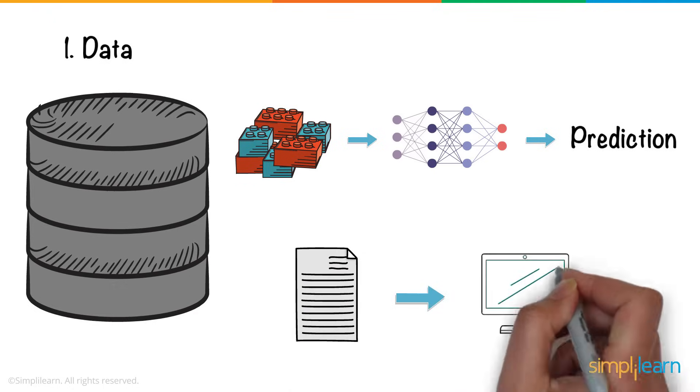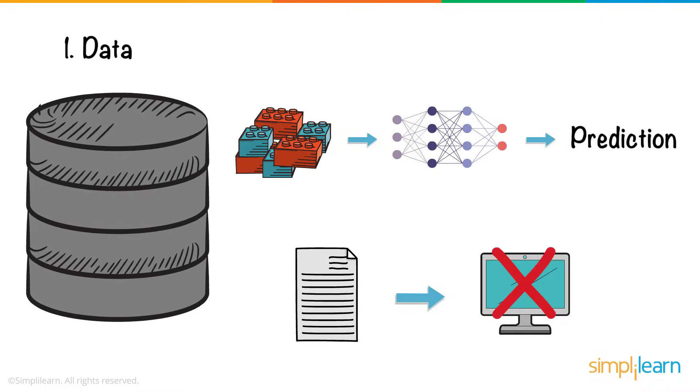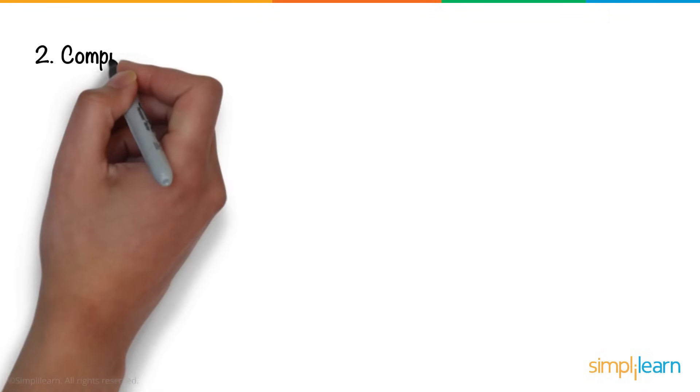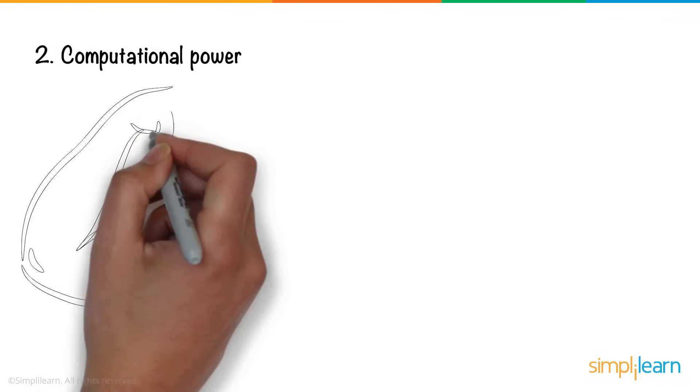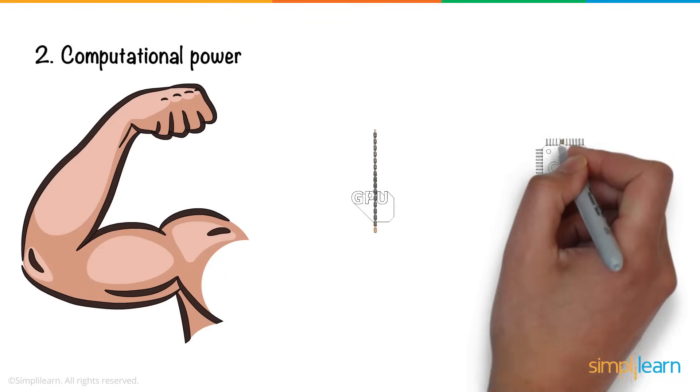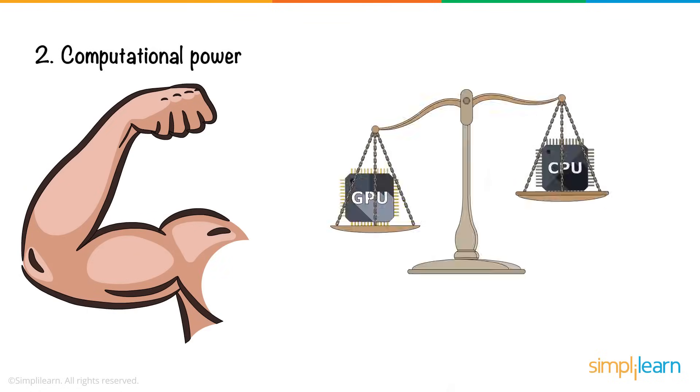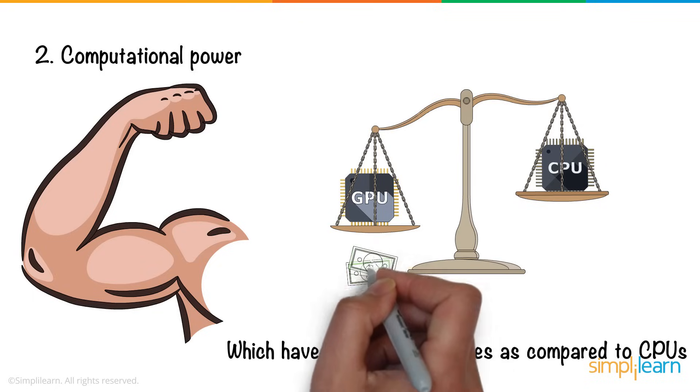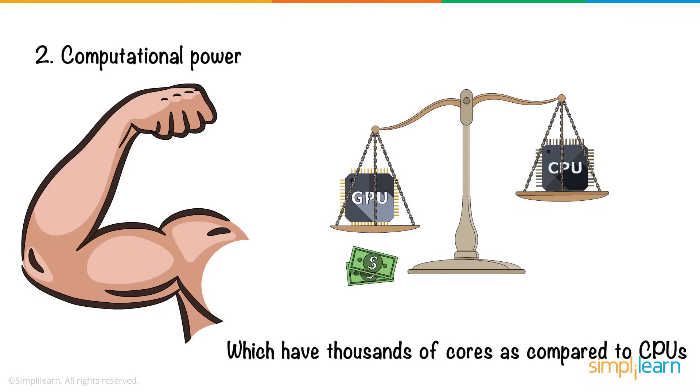Processing this is not within the capability of every machine. And that brings us to our second limitation. Computational power. Training a neural network requires graphical processing units, which have thousands of cores as compared to CPUs. And GPUs are, of course, more expensive.